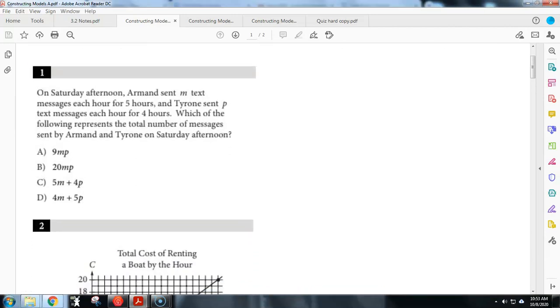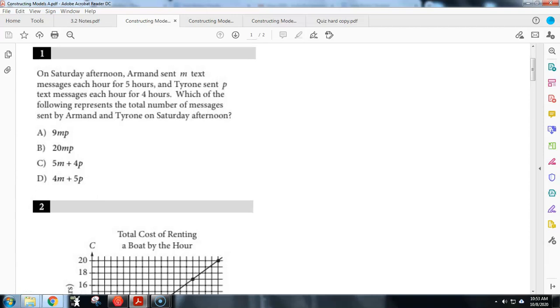Alright, this is Constructing Models A. Number one, it says on Saturday afternoon Armand sent M text messages every hour for five hours and Tyrone sent P text messages every hour for four hours. Which of the following represents the total number of messages sent by both of them. Alright, so our key word there is we're looking for the total.